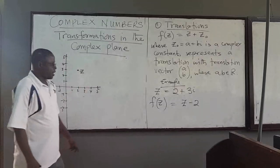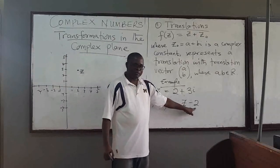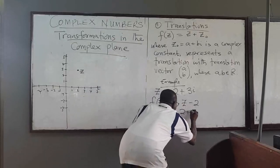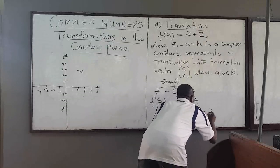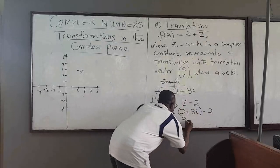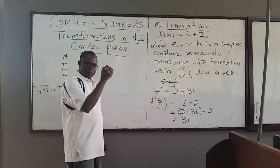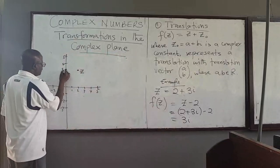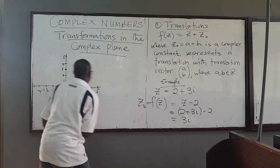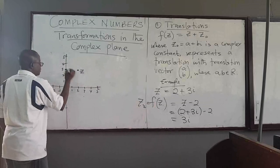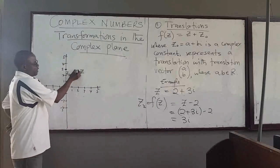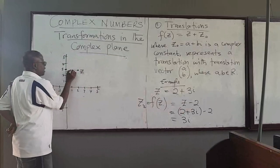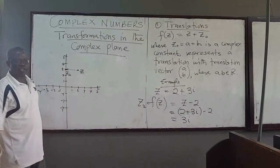Now, if I add another complex number — in this case negative 2 — to z, I compute: z is 2 plus 3i minus 2, the 2's cancel, and I'm left with 3i. The point 3i is at (0, 3). So f(z), let's call it z2, is here at (0, 3). Basically, it's a translation — I've moved this point to there — and that's why it's called a translation.